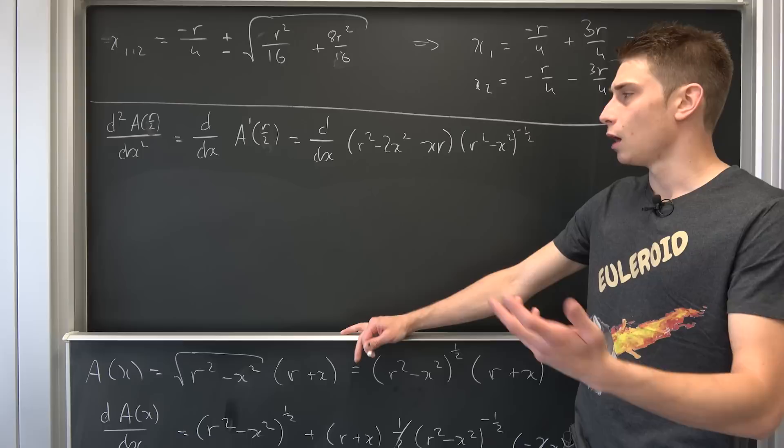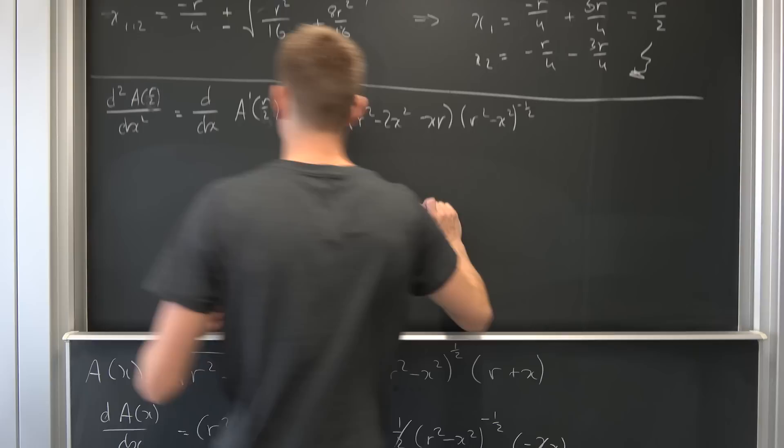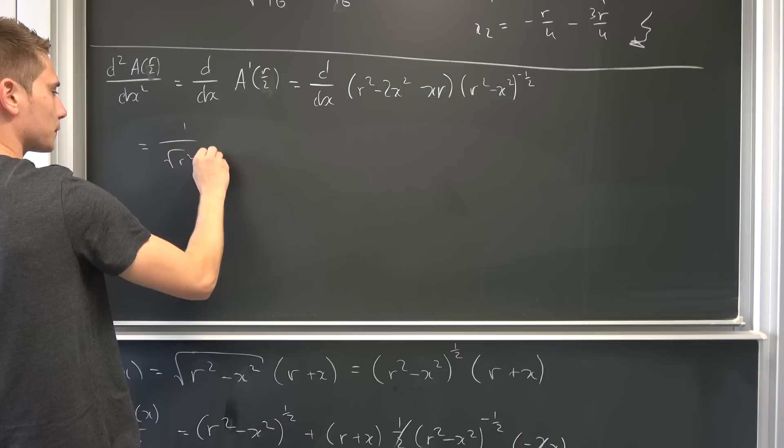You see I've written everything out once again. We just have to take the derivative of the first derivative obviously, and let's go ahead and do this. I would love this part to stay at first and differentiate this part. So we end up with 1 over square root r squared negative x squared times.